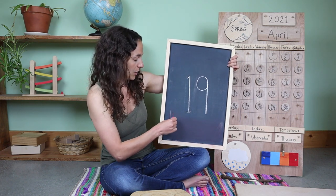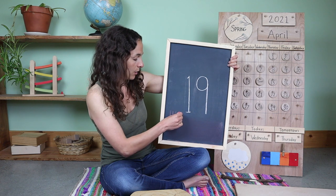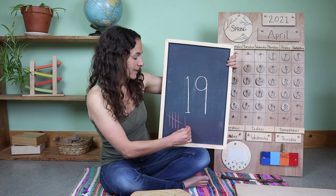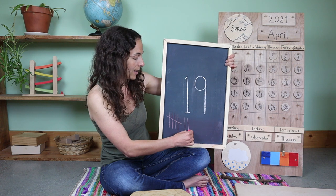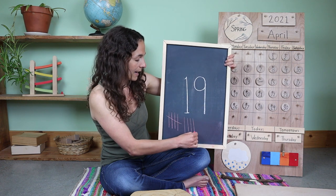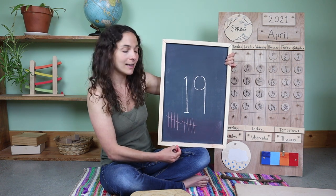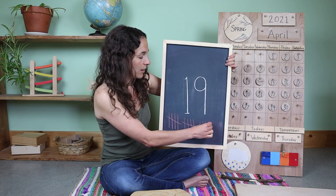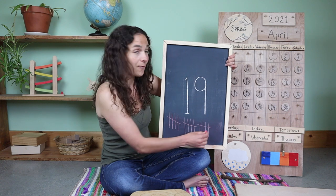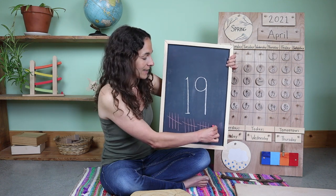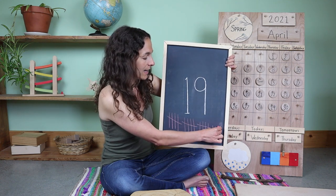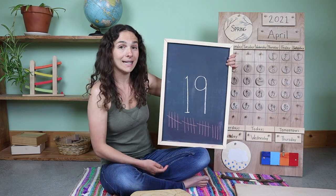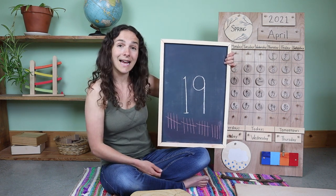I'm going to grab my piece of chalk so that we can count 19 tally marks together. Are you ready? One, two, three, four — five goes across, six, seven, eight, nine — ten goes across, eleven, twelve, thirteen, fourteen — fifteen goes across, sixteen, seventeen, eighteen, and one more makes 19. 19 tally marks.